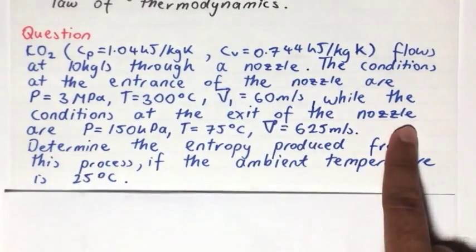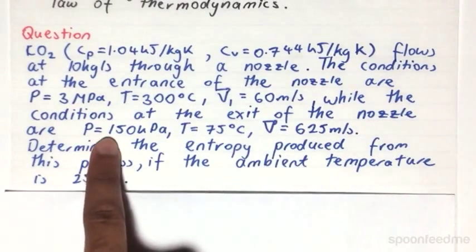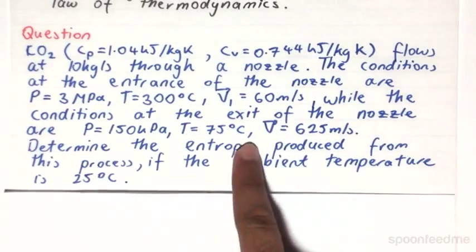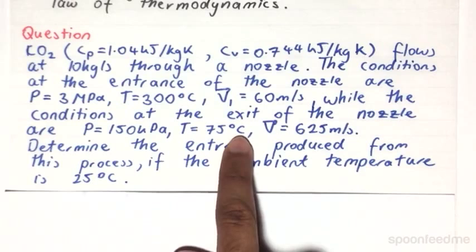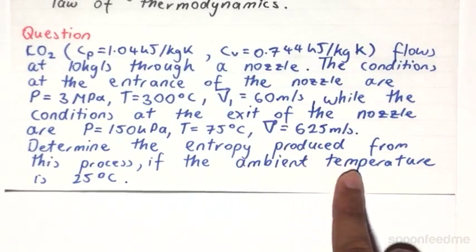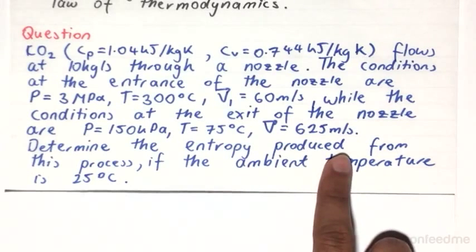While the conditions at the exit of the nozzle are: the pressure is 150 kilopascals, the temperature is 75 degrees Celsius, and the velocity is 625 meters per second.